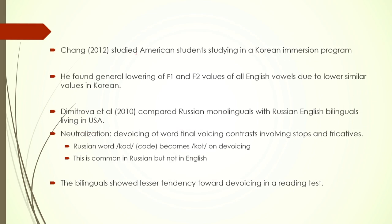Another study looked at American students studying in a Korean immersion program. They found a general lowering of F1 and F2 values of all English vowels due to lower similar values in Korean. Korean vowels have different F1 and F2 frequency values compared to English — English vowels have a higher value than Korean. After participants had been studying in the Korean immersion program for some time, their vowels in English also had lower F1 and F2 values.